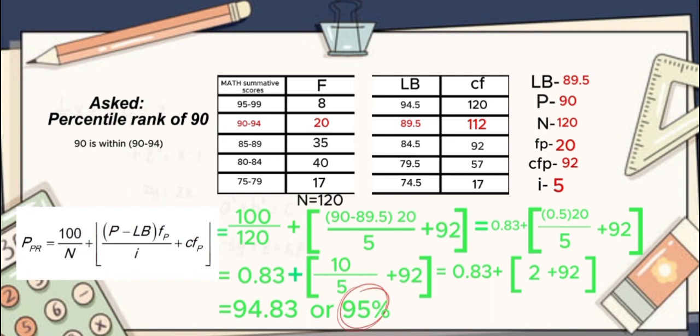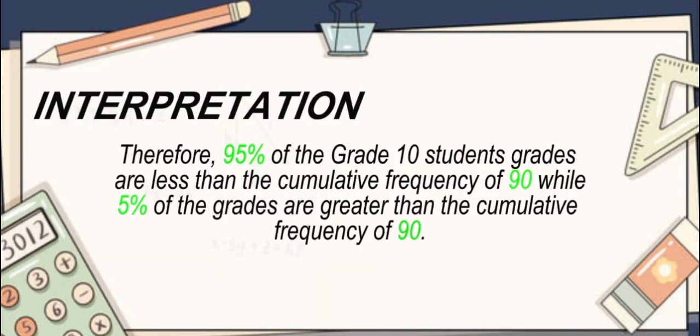Round off the answer, so it will become 95%. Last step is to interpret the results. Since our answer is 95%, therefore 95% of the grade 10 students' grades are less than a cumulative frequency of 90, while 5% of the grades are greater than the cumulative frequency. The 5% is from subtracting 100 by 95, so it results to 5.